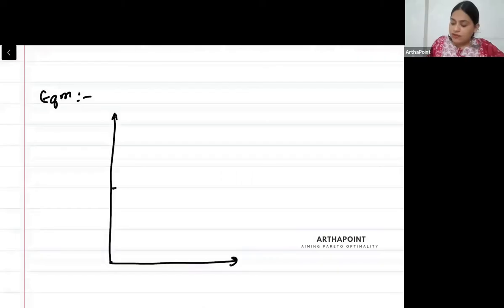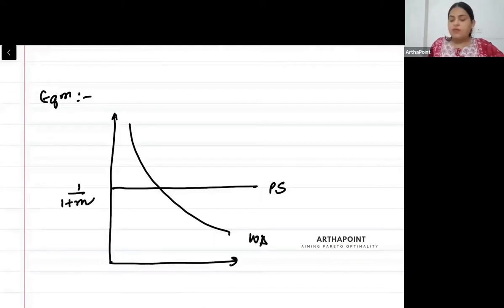We will have the price setting relation here and the wage setting relation here. The price setting relation and the wage setting relation are equal to each other. This is called your equilibrium.